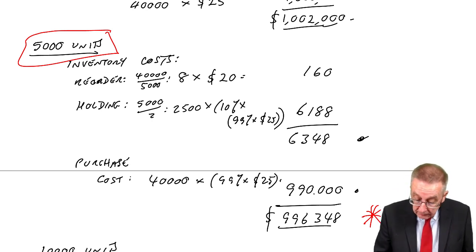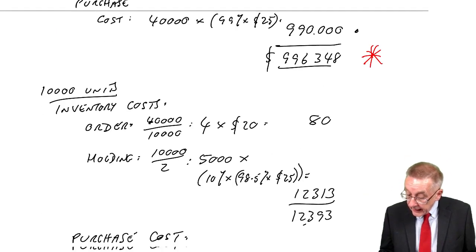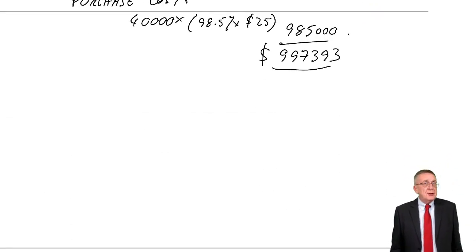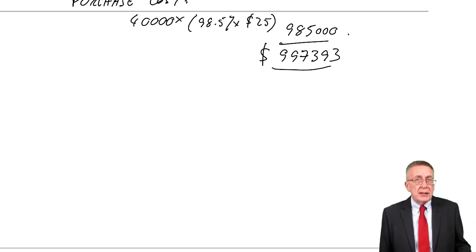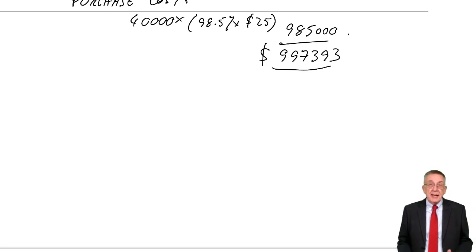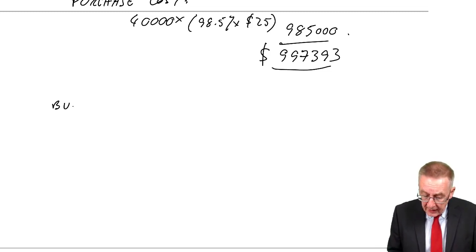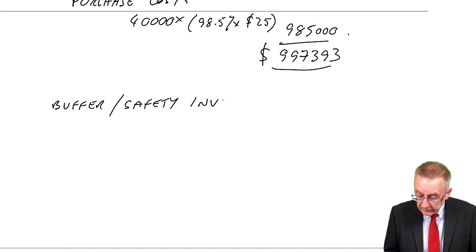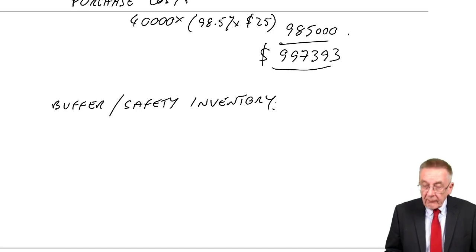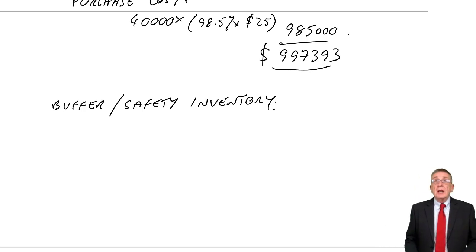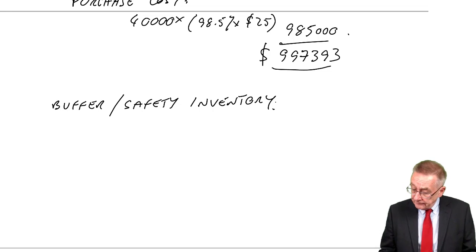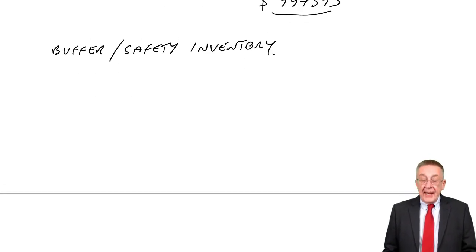That's it really for economic order quantity. If you did pay for F2, you'll know in F2 you were also tested on something called the economic batch quantity. But that isn't tested at F9. It's simply the EOQ. One tiny thing I'd better mention just to be safe. Sometimes you might see mention of what's called buffer or safety inventory.